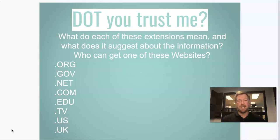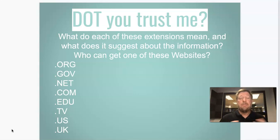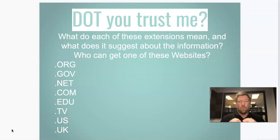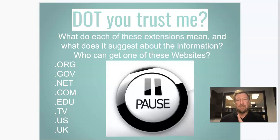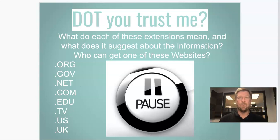What follows that dot? .org, .gov, .net, .com, .edu, .tv, .us, .uk — there are more, but those are the common ones. What I want you to do is think about what each of those extensions mean, and who can get each of those. Pause and think about that, then hit play once you've figured out what each of those means and who can get one.